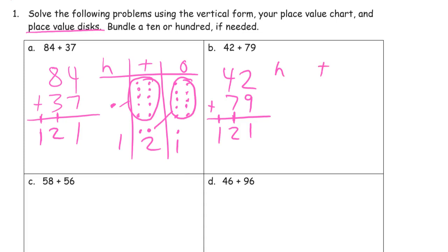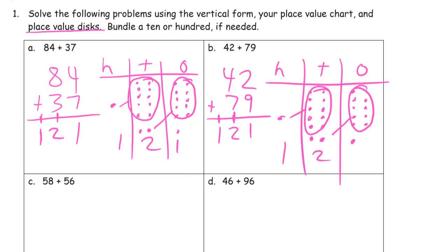H, T, O. 42 is 4 tens and 2 ones. 79 is 7 tens and 9 ones. There's 10 ones, that makes a 10. Here's 10 tens, that makes 100. There's your 100. 121.